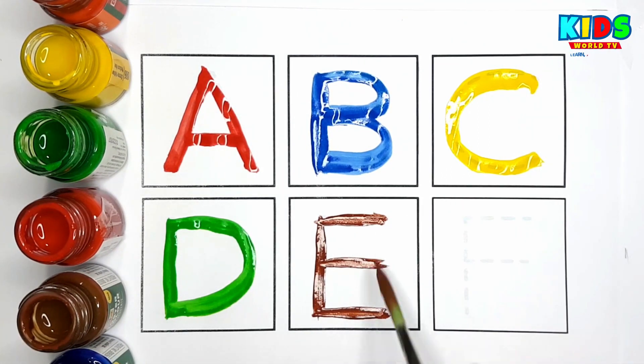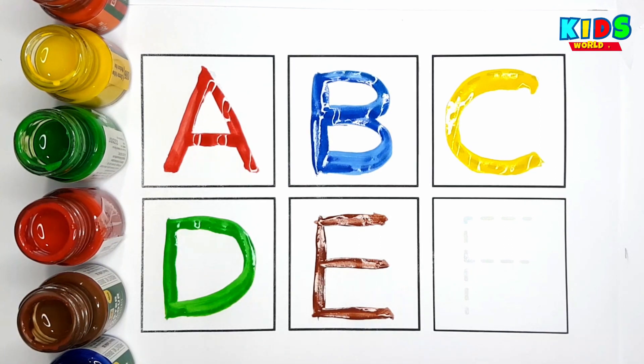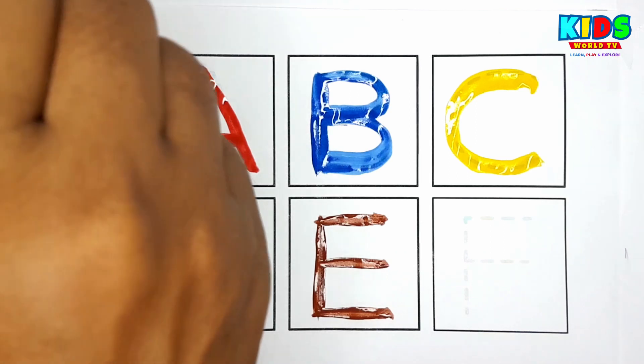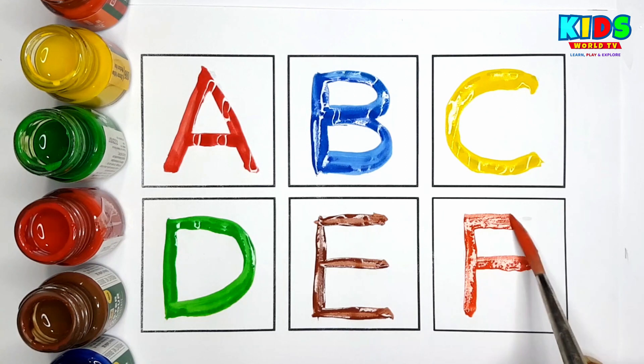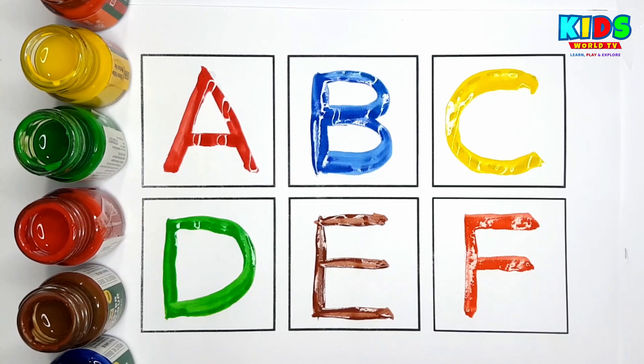V, W, X, Y, Z. Now I know my ABCs, next time won't you sing with me. B for Frog. B for Frog.